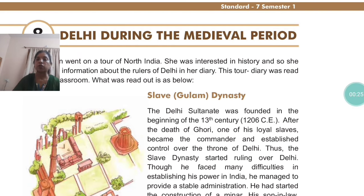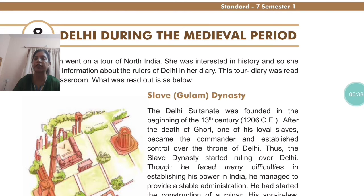Children move on to their tour to North India where they are interested in history and so they have collected information about the rulers of Delhi in their diary. This tour diary was read in the classroom and what was read out was as below.